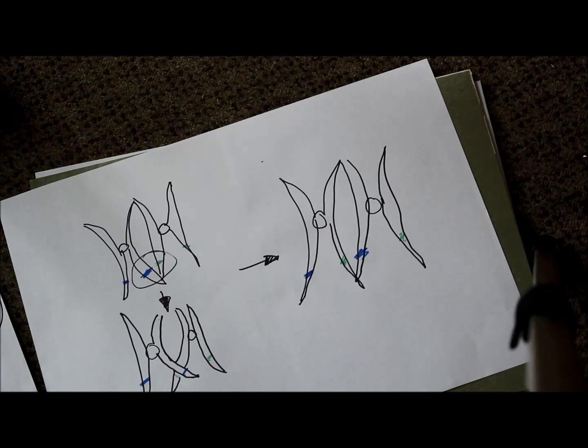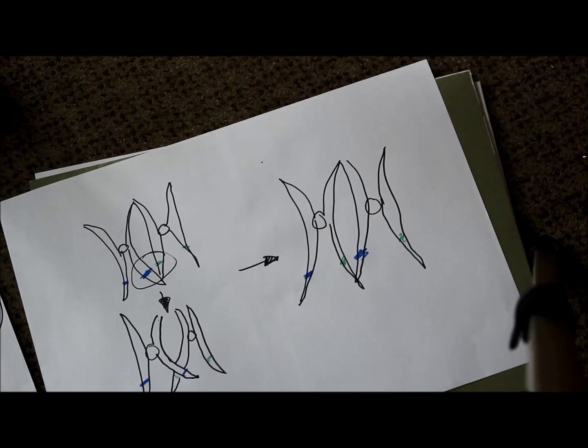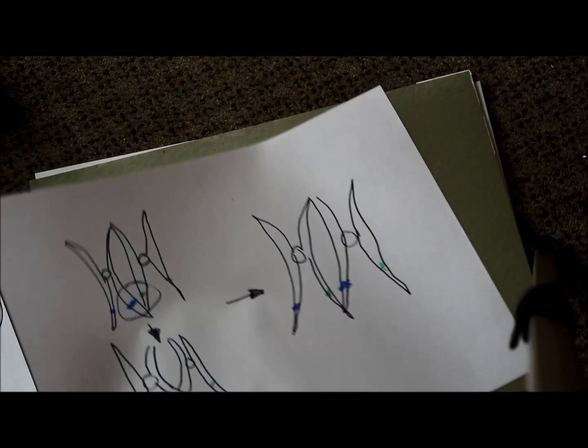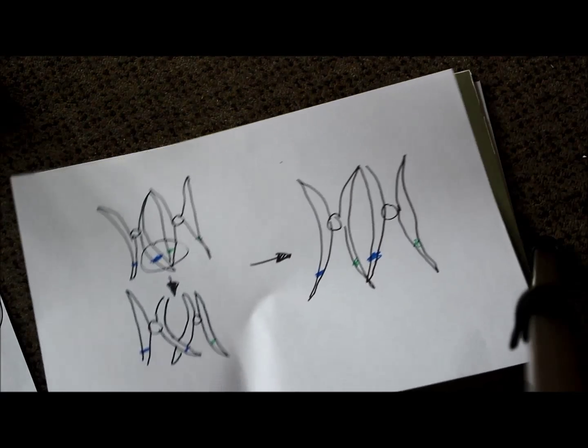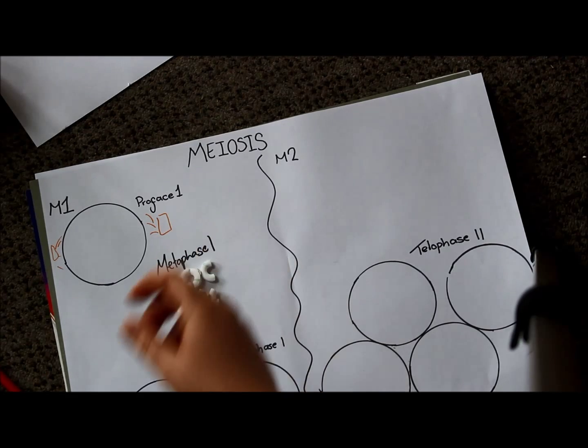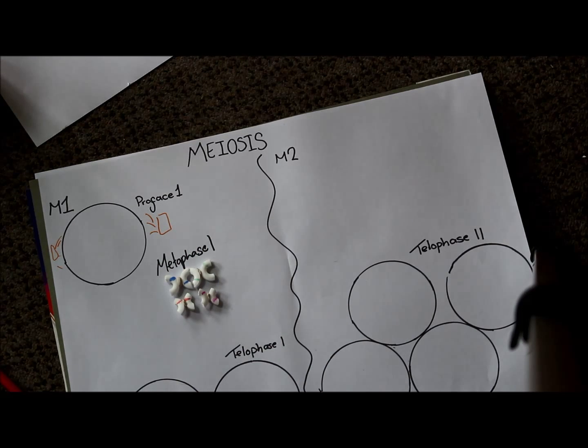This is because meiosis occurs when you are making gametes, which are sex cells. Crossing over ensures that you end up with sex cells with a variety of different genetics in them. You want a large gene pool. So, we're in metaphase one, and crossing over has occurred.